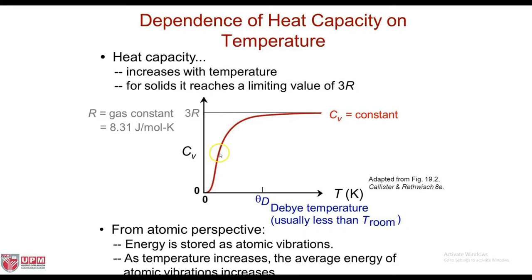At low temperatures, the relationship between Cv and temperature is given by Cv equal to A times T to the power of 3. Above what is called the Debye temperature, Cv levels off and becomes essentially independent of temperature at a value of approximately 3R, where R is equal to the gas constant.